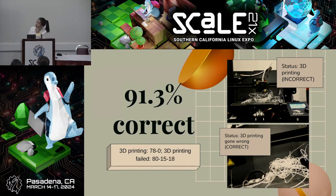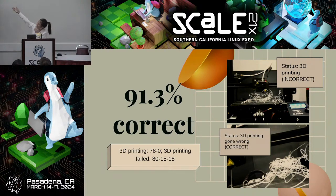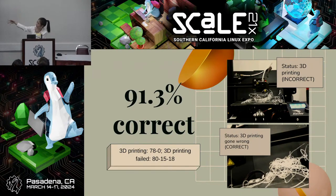On the slides you can see the actual photos used. In one example, the 3D printing is clearly going wrong but the status fed back was '3D printing' — which is incorrect. In a different photo, the printing is also going wrong and the status correctly shows that it has failed.